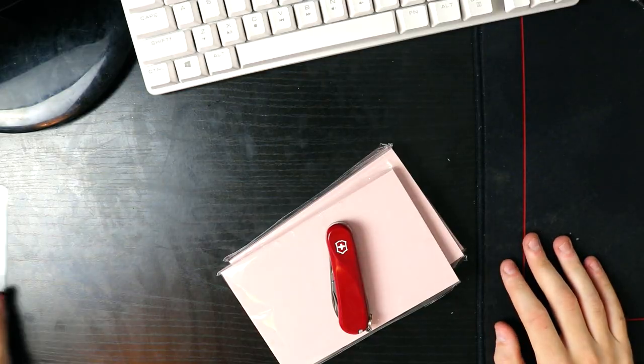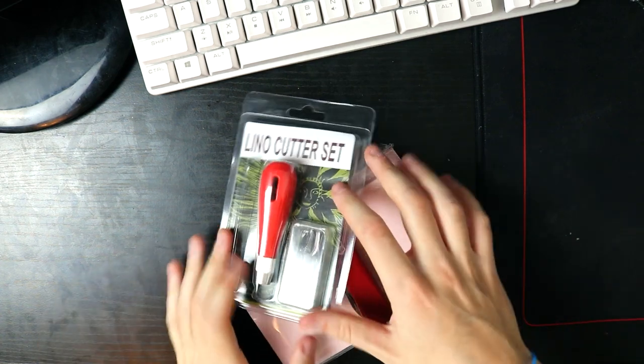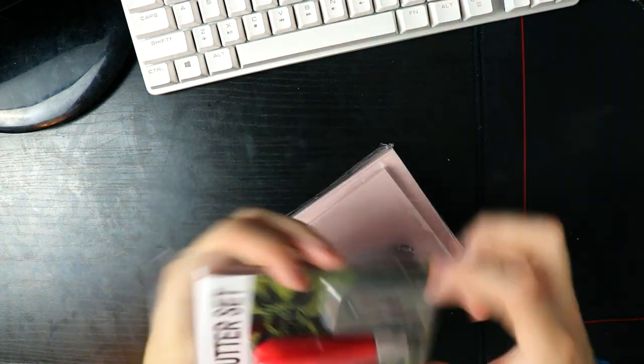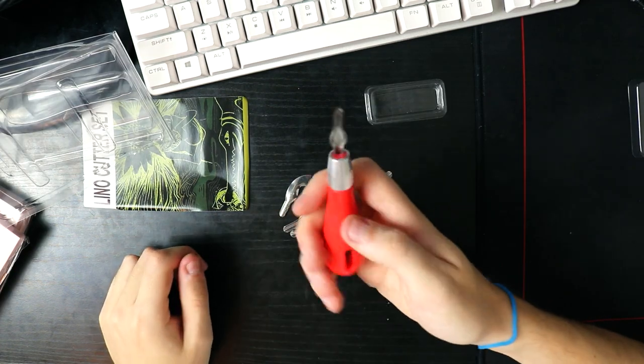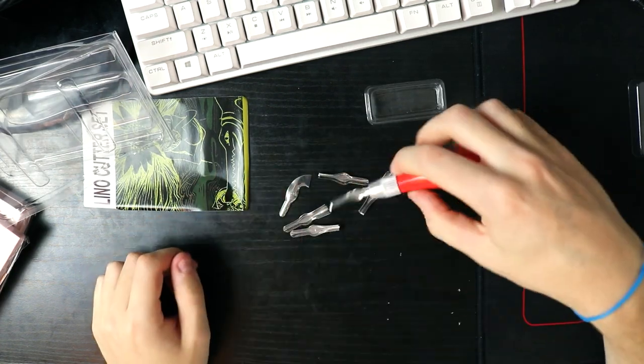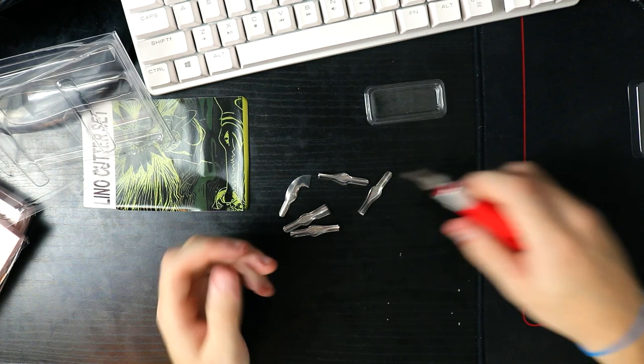All you really need to do this is a linoleum block. It's basically like a rubber block and they come with a little cutter thing, a scooper, a spoon, I don't know what it's called, a scraper.